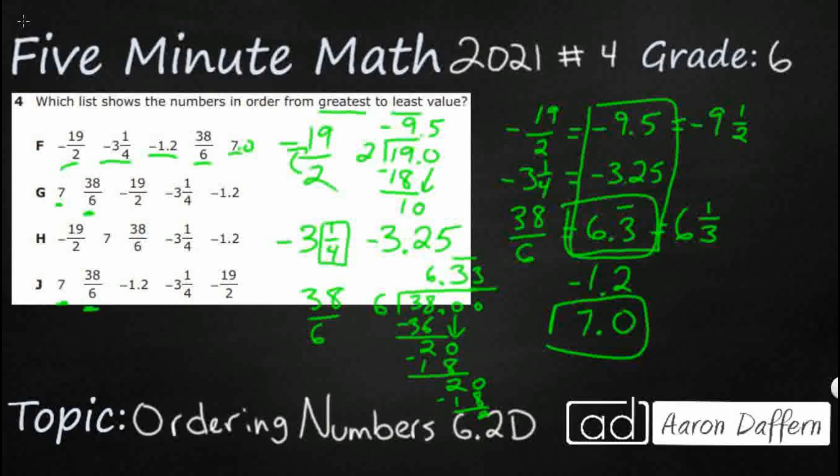So, now we need the next smallest. It's going to be the smallest negative. This negative 1.2 is closest to 0. So, that's going to be our next one. And then our negative 3.25. And then negative 9.5 or negative 19 halves.